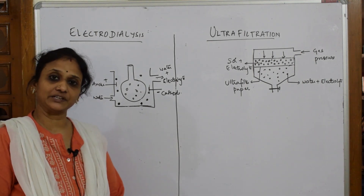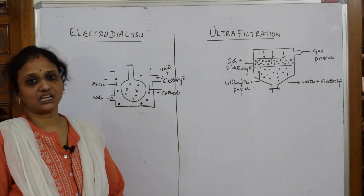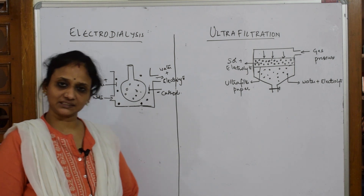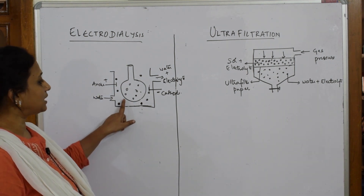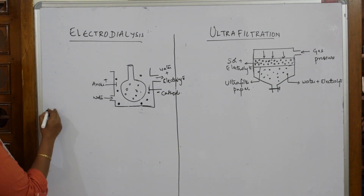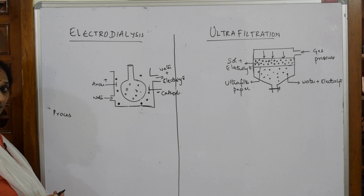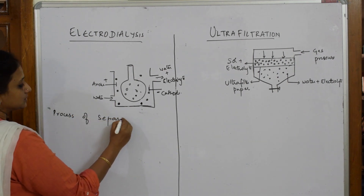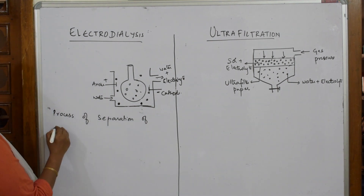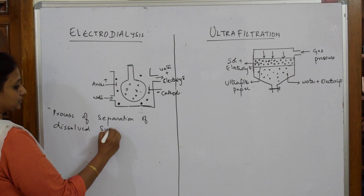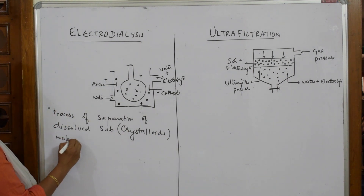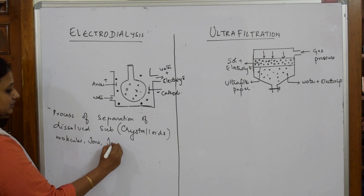In dialysis we used an animal membrane, parchment membrane, or cellophane paper as a dialyzing membrane. In electro dialysis, everything is the same — the only difference is you place the parchment membrane under an electrical field. Electro dialysis is a process of separation of dissolved substances, which are crystalloids — molecules or ions.